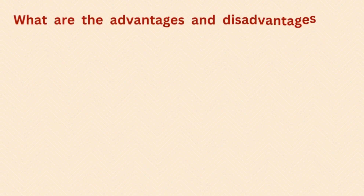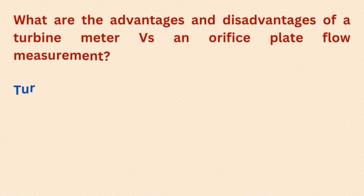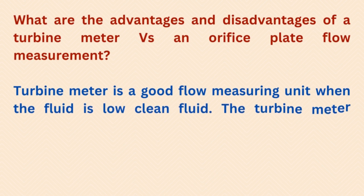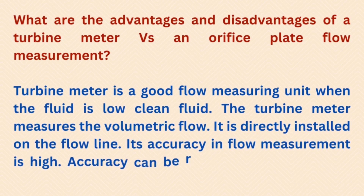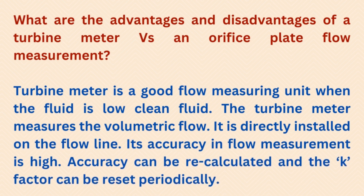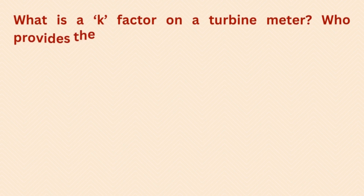What are the advantages and disadvantages of a turbine meter versus an orifice plate flow measurement? A turbine meter is a good flow measuring unit when the fluid is a clean fluid. The turbine meter measures volumetric flow; it is directly installed on the flow line. Its accuracy in flow measurement is high, and accuracy can be recalculated and the K factor can be reset periodically.